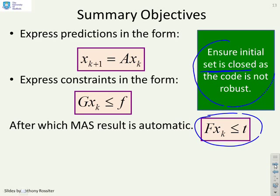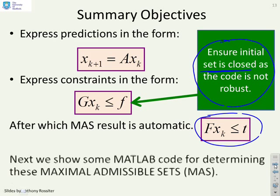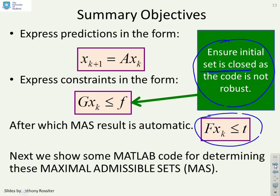And what we've said we need to ensure that the initial set is closed, and the reason for that is the code I'm providing is not robust to allowing some state directions to go off to infinity. And again that's a mathematical detail I don't want to deal with in these videos, but you can do separately if you want to. So what we're going to do now is show some simple MATLAB code for determining these maximal admissible sets.